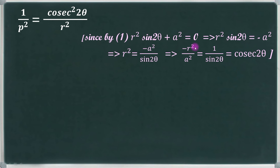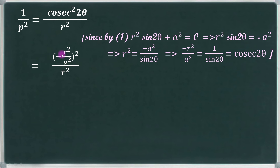Substituting cosec² 2θ = r⁴/a⁴ into our equation, we get 1/p² = (r⁴/a⁴) divided by r², which simplifies to 1/p² = r²/a⁴.